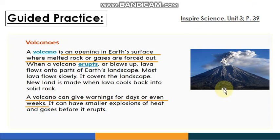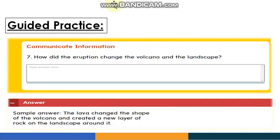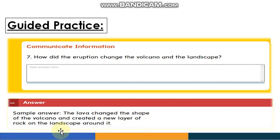Volcanoes can also give warnings for days or even weeks, because they can have smaller explosions of heat and gases before erupting. Now let's answer: How did the eruption change the volcano and the landscape? The lava changed the shape of the volcano and created a new layer of rock on the landscape around it.